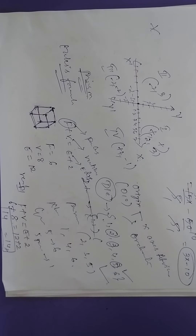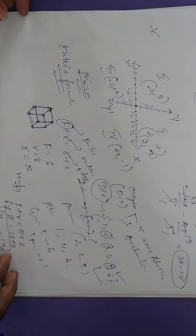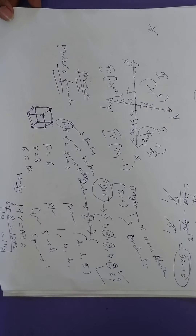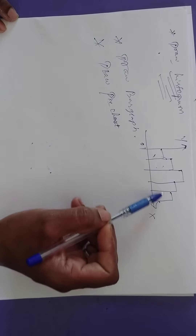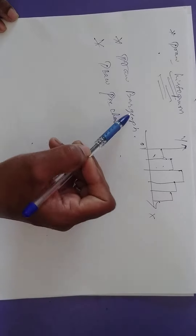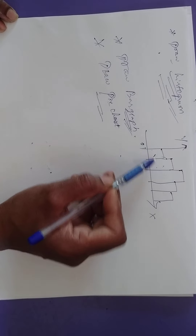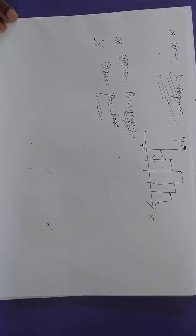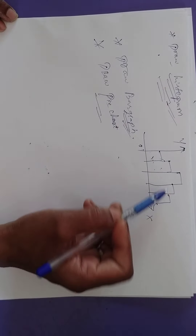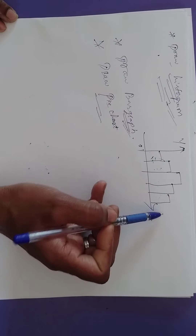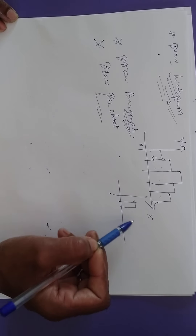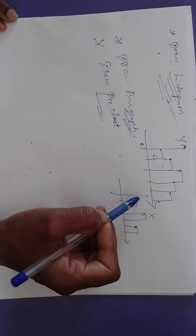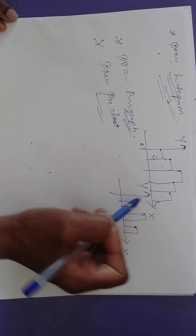Draw the histogram — that also you have to practice. What is the difference between histogram and bar graph? Both look like bars and rectangle shapes, but in a histogram there are no gaps between two intervals, while in a bar graph we have gaps. Go through both histogram and bar graph.